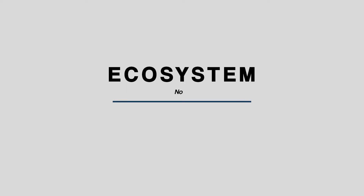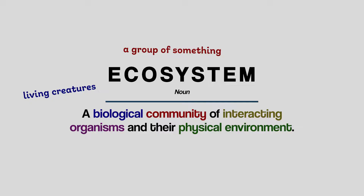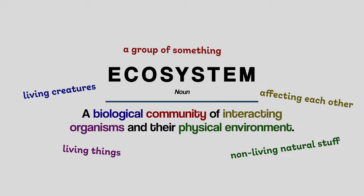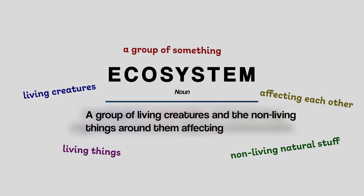An ecosystem is defined as a biological community of interacting organisms and their physical environment. That's a bit of a mouthful though, so let's keep it simple: biological means living creatures, community means a group of something, interacting means affecting each other, organisms are living things, and physical environment means non-living natural stuff. Simplified, an ecosystem is a group of living creatures and the non-living things around them affecting each other.